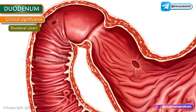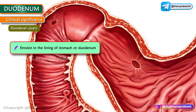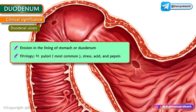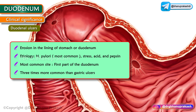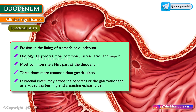Regarding clinical significance: inflammatory erosions of the duodenal mucosa are called duodenal ulcers, most commonly caused by H. pylori, but also by stress, acids, and pepsin. The most common site is the posterior wall of the first part of the duodenum, due to direct exposure to acidic chyme from the stomach before it is mixed with pancreatic juices in the second part. Occasionally an ulcer perforates the duodenal wall, allowing contents to enter the peritoneal cavity and causing peritonitis. Duodenal ulcers are three times more common than gastric ulcers, and erosion of the pancreas or gastroduodenal artery causes burning, cramping, and epigastric pain.